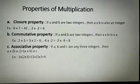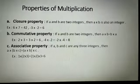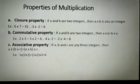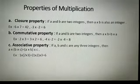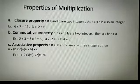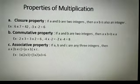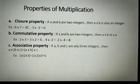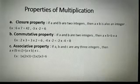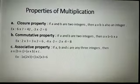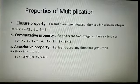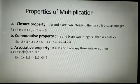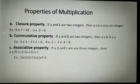The second property is commutative property. In commutative property, we take two integers A and B, and multiply them by interchanging their positions — that means A multiplied by B and B multiplied by A — and we see whether the answer is the same or not. If the answer is the same, that property is called commutative property.